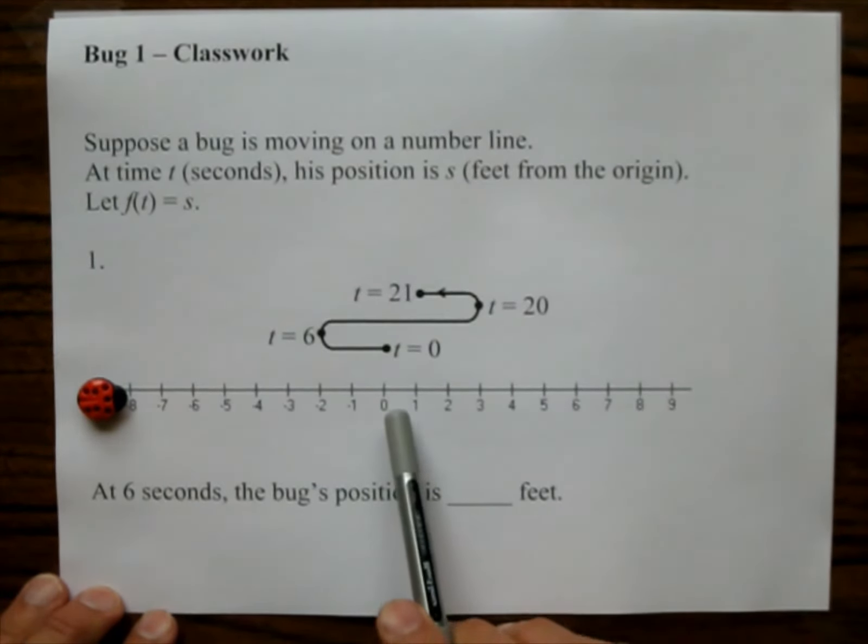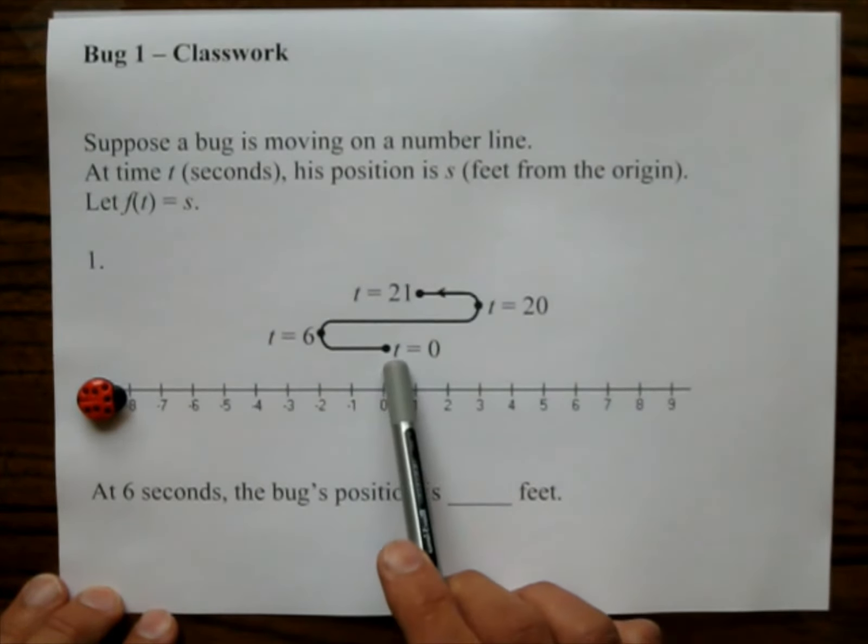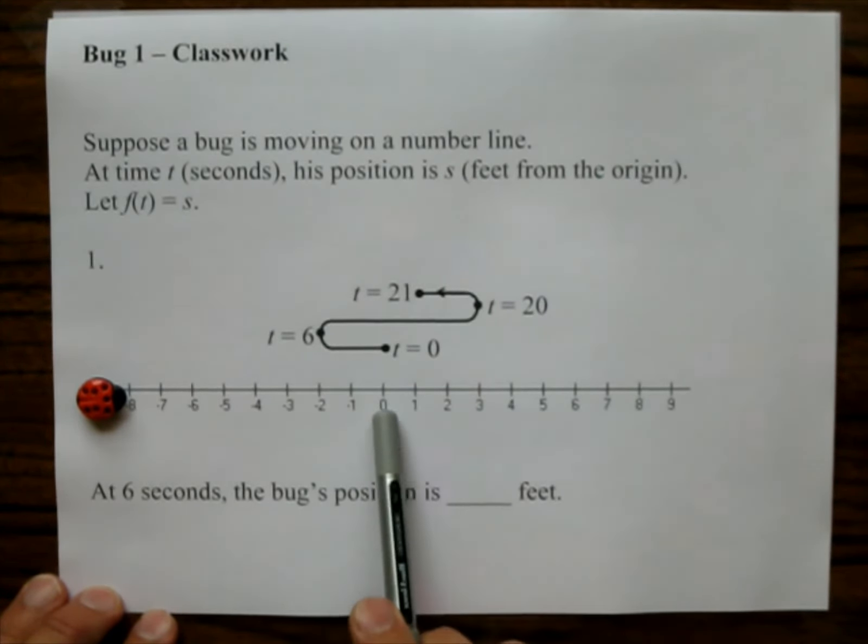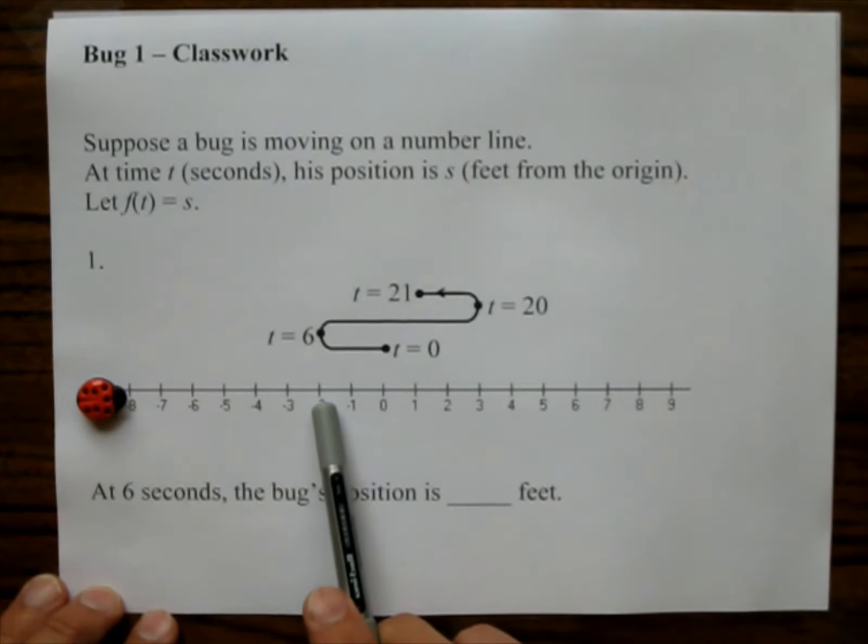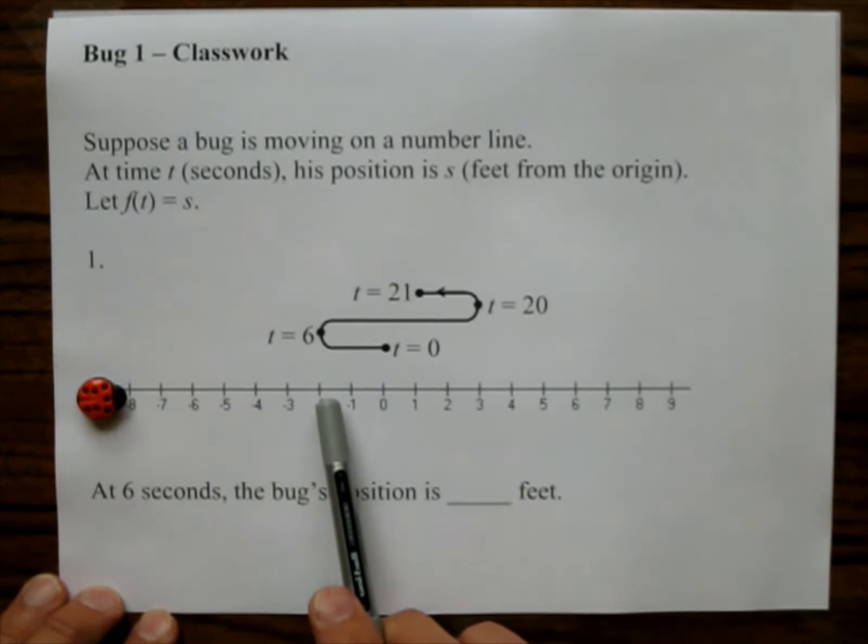That at time 0, the bug is at the origin. And then after 6 seconds, the bug has now moved over to negative 2. So at 6 seconds, the bug is at negative 2.